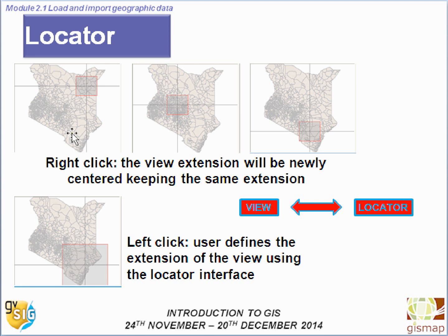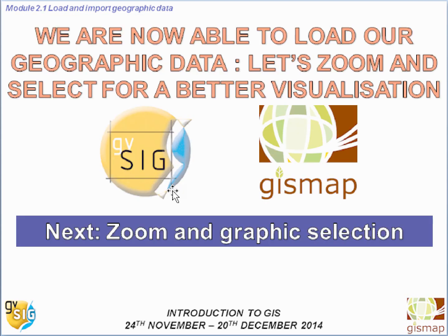If you right-click in the locator, the view extension will be re-centered keeping the same extent. If you left-click, the user defines the extension of the view using the locator interface — so there is a direct link between the view and the locator. Now we are able to load our geographic data. The next topic will cover zoom and graphic selection.